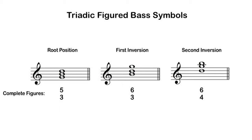Writing full symbols below every pitch would be very tedious and somewhat unnecessary, so a shorthand notation developed. For root position, both figures were dropped — a note without a figure represents a root position triad. For first inversion, the three was dropped — a note with only a six indicates a first inversion triad. Nothing was dropped from second inversion, so a figure of six-four still means a second inversion triad.